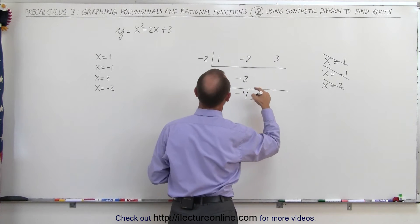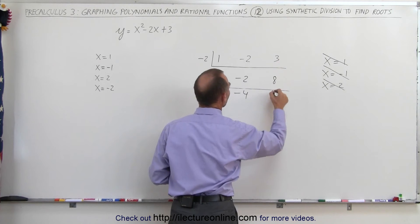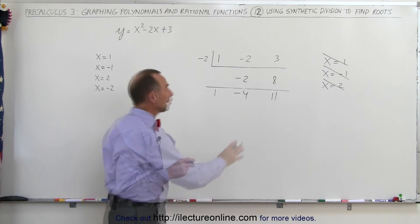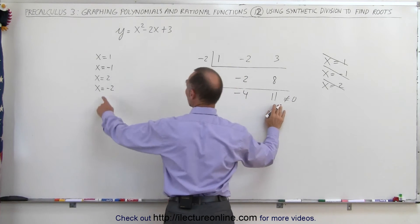Negative 2 times negative 4 is positive 8, add it together, you get 11. So this is not equal to 0. Again, we didn't find a root. X equals negative 2 is not a root.